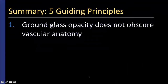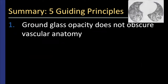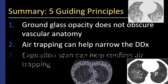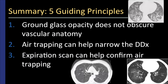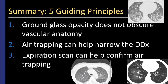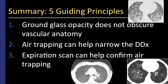I promised five guiding principles — here they are. First, use the term ground glass opacity correctly: it's increased lung attenuation that does not obscure the vascular anatomy, in contrast to consolidation, which does. Second, look for air trapping because it helps narrow the differential diagnosis — focus on more lucent lung and ask if the blood vessels are fewer and smaller, which could indicate mosaic perfusion from airway abnormality causing reflex vasoconstriction. Chronic PE is another cause. Third, expiration scanning is extremely helpful to confirm air trapping, often done with non-contiguous low radiation dose technique.